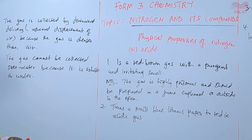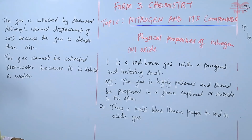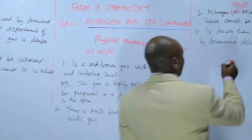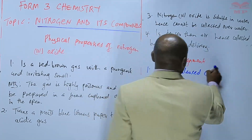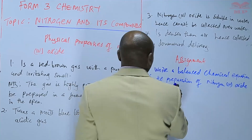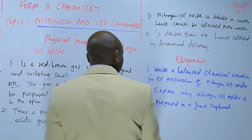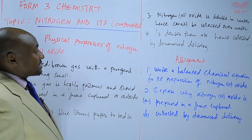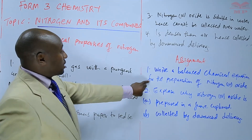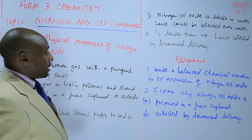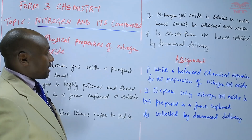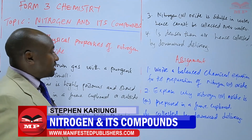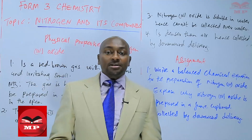We have identified the physical properties of nitrogen(IV) oxide. For the assignment: question one — write a balanced chemical equation for the preparation of nitrogen(IV) oxide. Question two — explain why nitrogen(IV) oxide is prepared in a fume cupboard, and why it is collected by downward delivery. We'll stop there until next time. Goodbye.